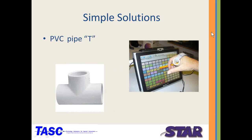The final simple solution is a PVC pipe T-connector, available at Home Depot or Lowe's for about a dollar. I use these as a type of grasp for a stylus. You can hold a stylus in the circular opening using Play-Doh or a sponge. If a student can't make the standard pincer grasp needed to hold a stylus, this may be a great option.